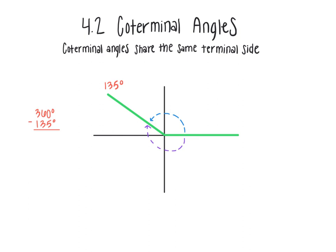In the clockwise direction, I have an angle that is equal to 225 degrees. But when I write the angle out I have to include the negative sign, because I need to indicate that I'm coming from the clockwise direction — so negative 225 degrees. Here I've found two coterminal angles: 135 degrees and negative 225 degrees are both coterminal because they share the same terminal side.